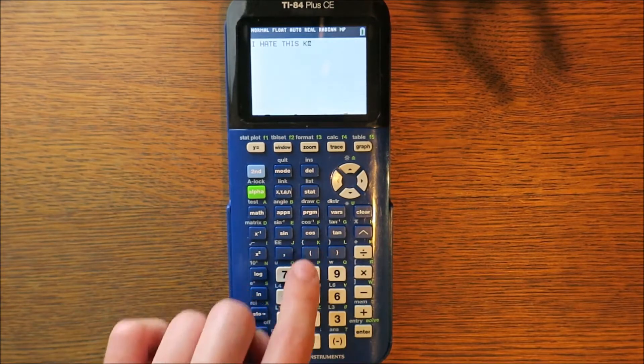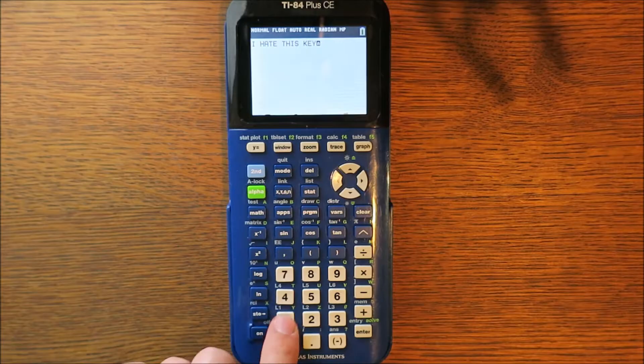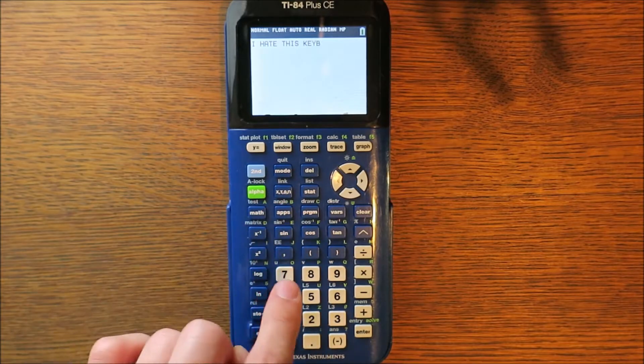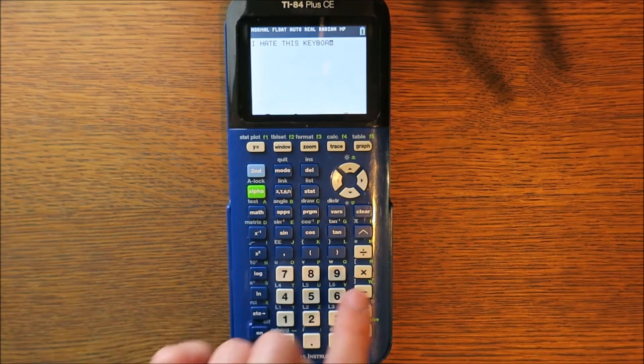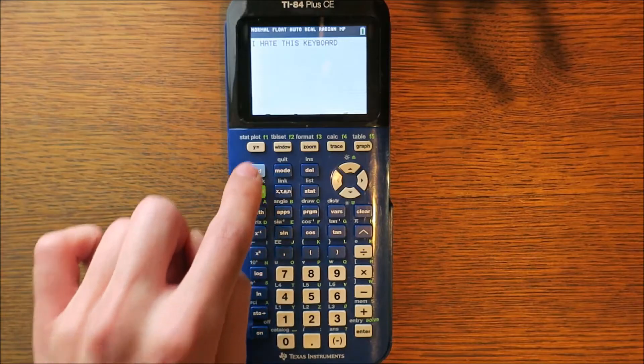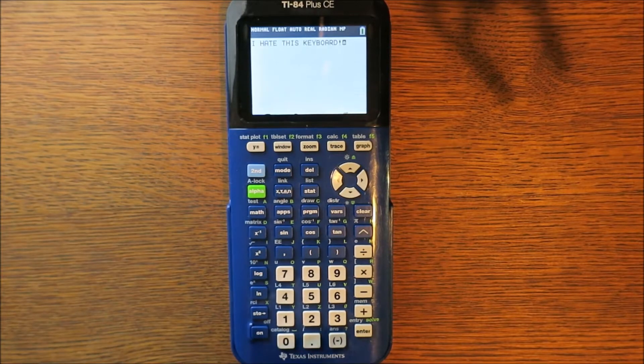You'll need three things. The first is obviously your calculator. The second is an OTG USB type A to mini USB type B. It is important that your adapter is OTG, so I've linked the adapter I'm using in the description.